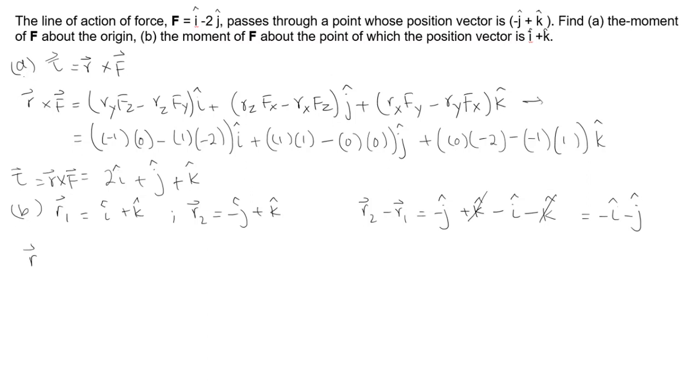If I say this is equation A, I plug values in. ry is -1 and fz is 0, minus rz is 0 and fy is -2